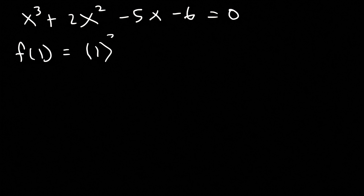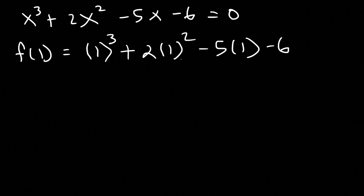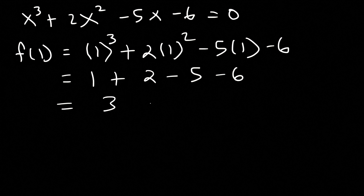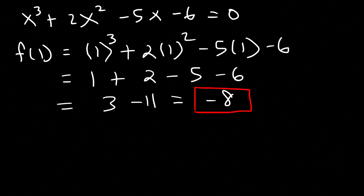f(1) = 1³ + 2(1²) - 5(1) - 6. 1 to the third power is 1, 1 squared times 2 is 2, 5 times 1 is 5. So 1 + 2 = 3, and 3 - 5 - 6 = -8. So f(1) is not equal to 0; therefore 1 is not a zero of this function.